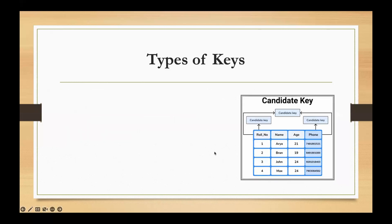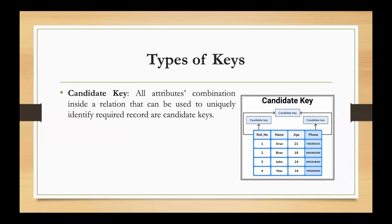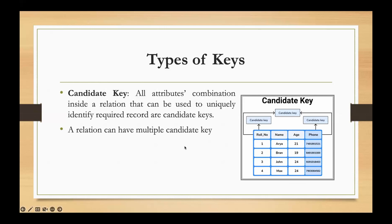What is a candidate key? The definition: all the attribute combinations inside a relation that can be used to uniquely identify records are candidate keys. A relation can have multiple candidate keys. The candidate key is a subset of the super key — it is the minimal super key.